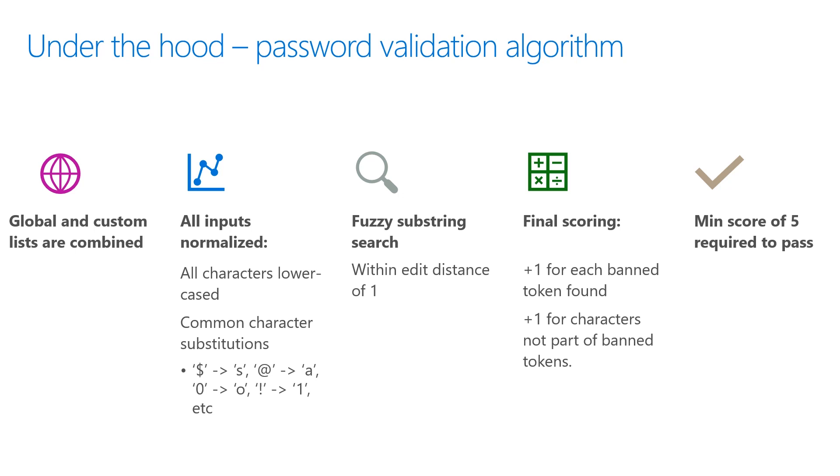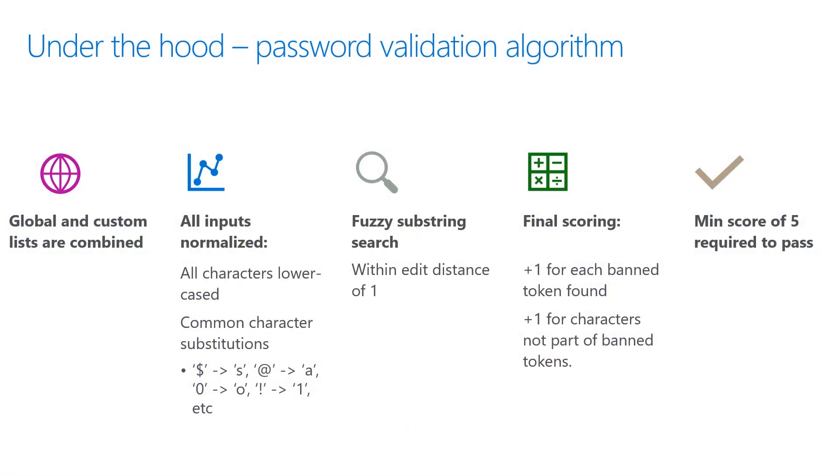Normalization consists of changing all capital letters to lowercase and performing common character substitutions. Users try to outsmart common passwords by changing 'A' to '@' or 'S' to '$', but the banned password algorithm identifies these character substitutions in the user's new password and replaces them with the associated letter. Next, the algorithm takes the normalized password and performs fuzzy matching to identify if it contains a word or phrase found in the combined password list. Fuzzy matching is performed with an edit distance of 1, meaning a match doesn't need to be exactly perfect. The algorithm can also detect matches from both the global and custom lists simultaneously.